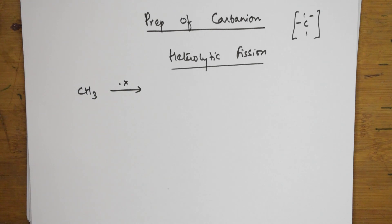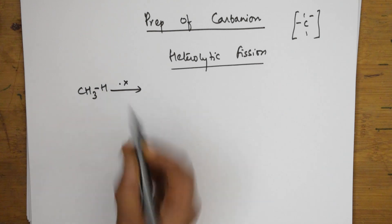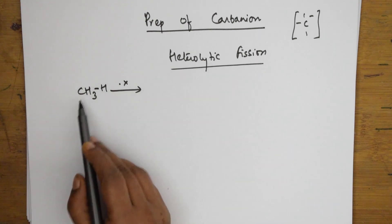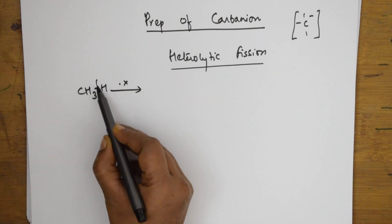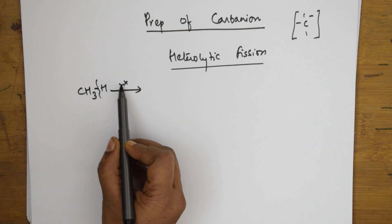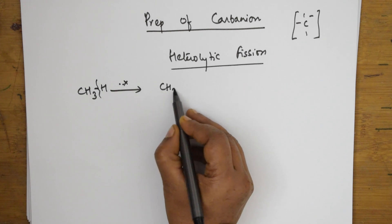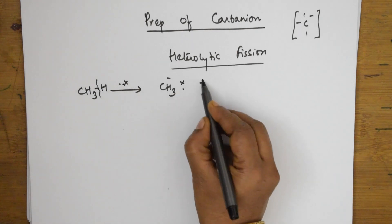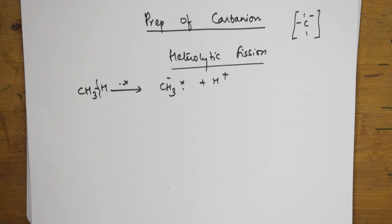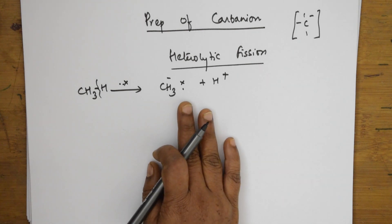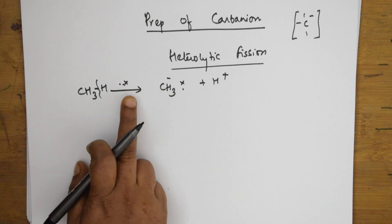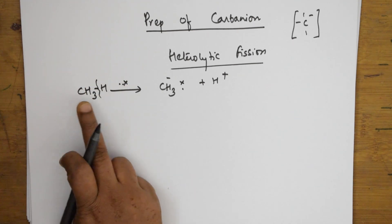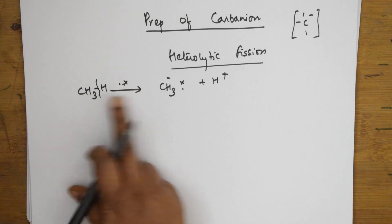For example, if I take an alkane like methane — CH₃–H — the bond pair is denoted by dot and cross. When there is a heterolytic fission, the shared pair of electrons is pulled up by the methyl group. When it pulls, the methyl group gets excess electrons and becomes CH₃⁻, and the leftover is a proton H⁺. This is how the carbanion is formed.